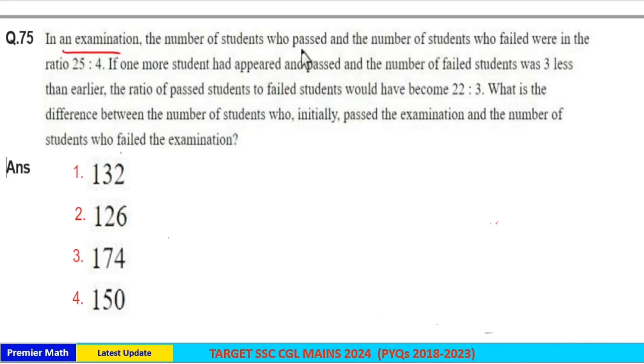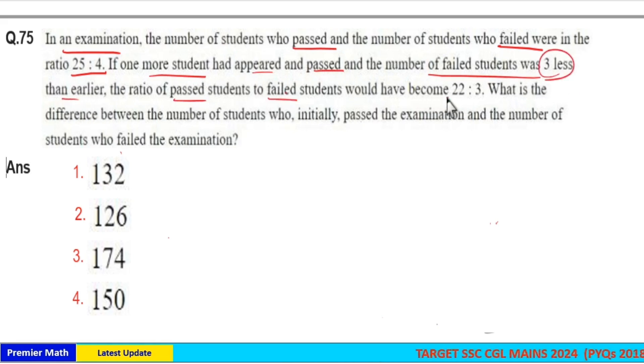In an examination, the number of students who passed and the number of students who failed were in the ratio 25 is to 4. If one more student had appeared and passed and the number of failed students was 3 less than earlier, the ratio of passed students to failed students would have become 22 is to 3.